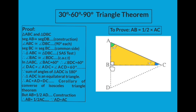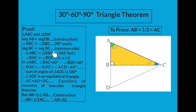Angle ABC is 90 degrees and similarly angle DBC is also 90 degrees, so angle ABC is congruent with angle DBC — reason: each angle is 90 degrees. Segment BC is common to both triangles — reason: common side. By these three steps, triangle ABC is congruent with triangle DBC — reason: side-angle-side (SAS) test.